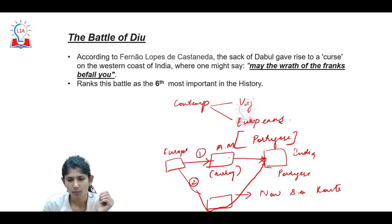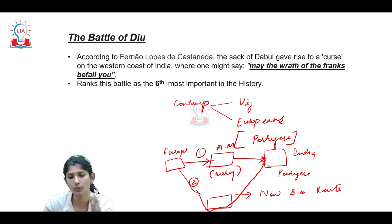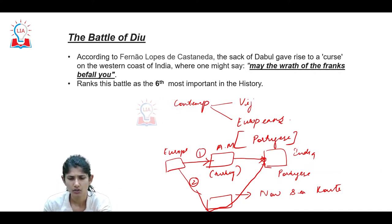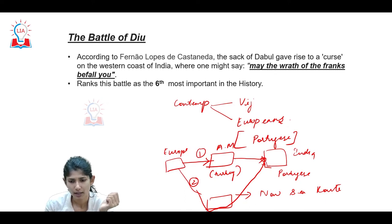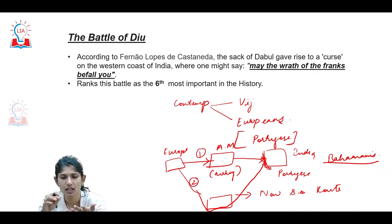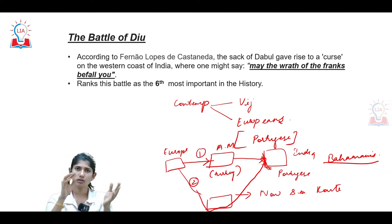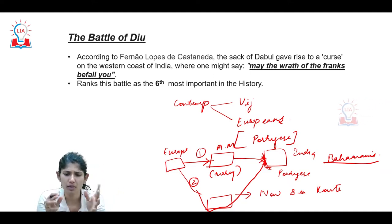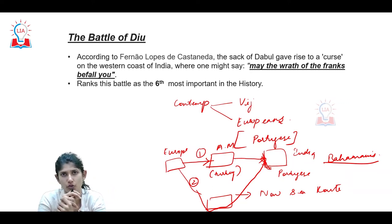The people already benefiting from the old trade route - the Sultan of Turkey, Genoans, and Venetians - were not happy with the Portuguese trying to establish hegemony over the new sea route. They came together near the Battle of Diu on the western coast. The Bahamanis were also present on these ports, so any war in this region affected them too. The combined forces defeated the Portuguese.